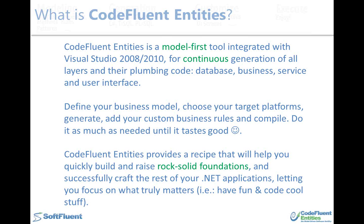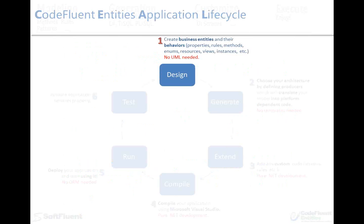Before diving into the demo, I'll explain the global process of developing an application using CodeFluent Entities. The first step is to define your business logic in your model. At this stage, we're totally agnostic of any technology — we specifically focus on the key concepts of our application, their properties, relations between one another, business rules, and so on. The model isn't necessarily a single file; it can be chunked into what we call parts to increase readability and allow team collaboration. The model isn't a UML or data access mapping model — it's a pragmatic model containing only a functional description of your application, readable by non-technical users.